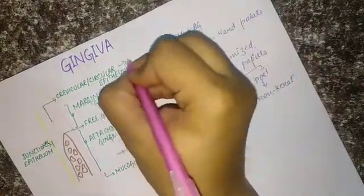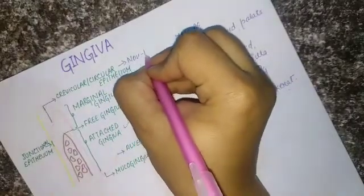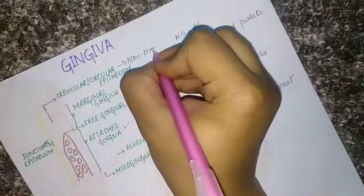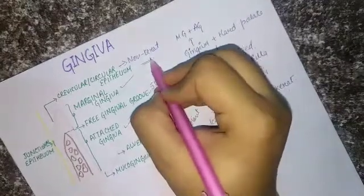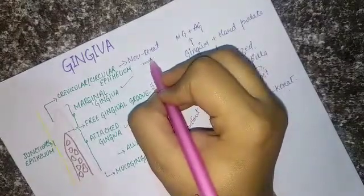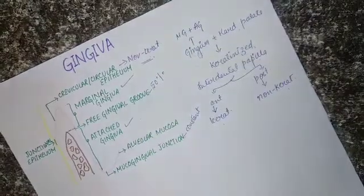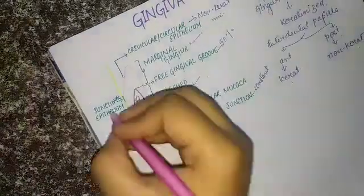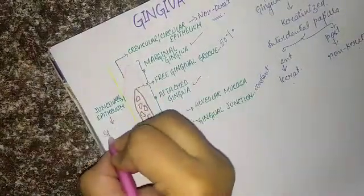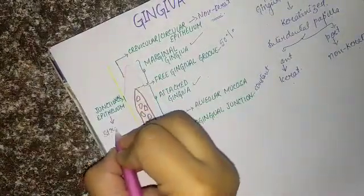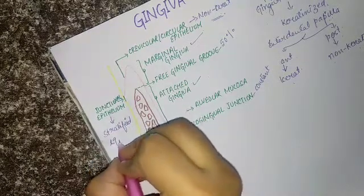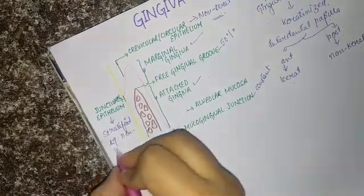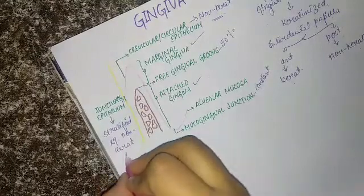The sulcular epithelium is non-keratinized, but it has the potential to keratinize when exposed to the oral cavity. In case of the junctional epithelium, it is lined by stratified squamous non-keratinized epithelium.